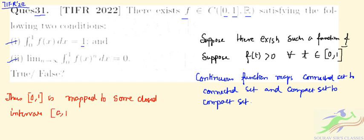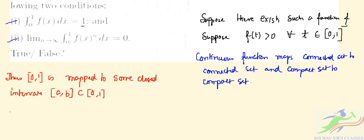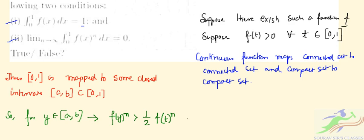Where [a,b] is strictly a subset of [0,1]. For y belonging to the closed interval [a,b], we have f(y)^n is greater than 1/2 times f(t)^n, where t belongs to [0,1].